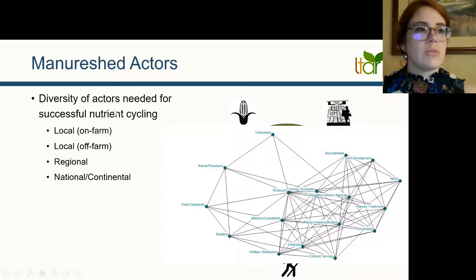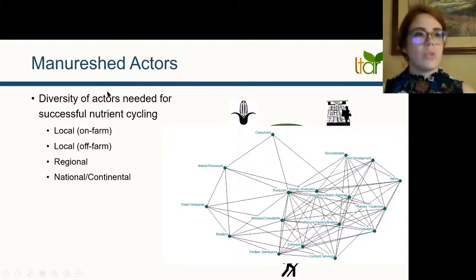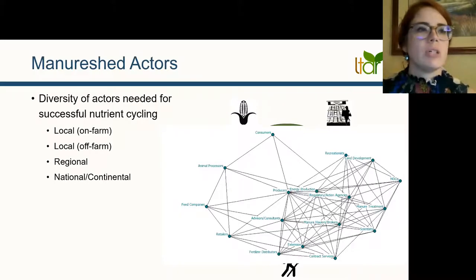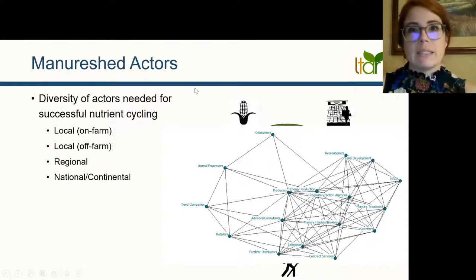So next, we're going to look at some aspirational social networks for each of these scales to further dive into how actors interact. Don't worry about understanding this figure quite yet, we'll dive in deeper, but this network shows the connections between different actors impacting manure sheds. Some of these actors are obviously more influential than others, and the strength of these connections at different scales also matters. We're going to stay with this figure but focus in on the local on-farm scale.